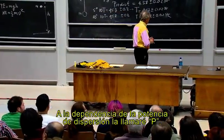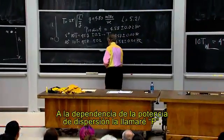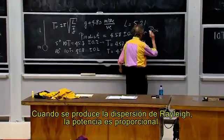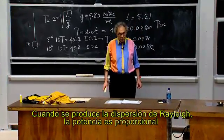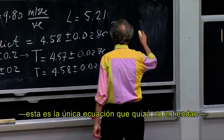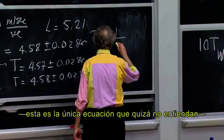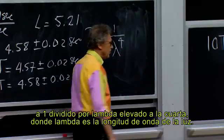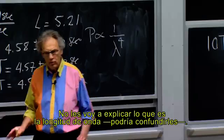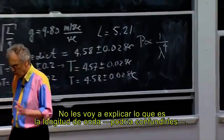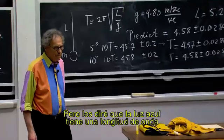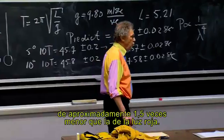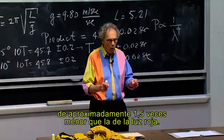The dependence of the power of scattering — I'll give that P, the power — is proportional, when we have Rayleigh scattering, to one over lambda to the fourth. Lambda is the wavelength of light. I will tell you that blue light has a wavelength which is about 1.5 times lower than red light.